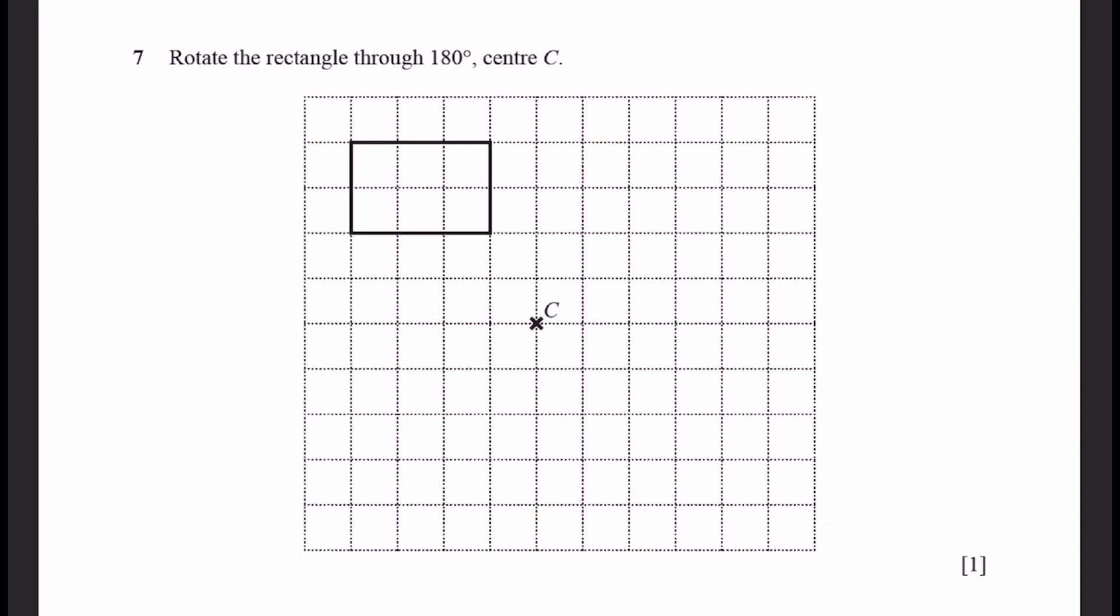Question 7. Rotate the rectangle 180 degrees, center C, which is given here. So we rotate this 180 degrees. It'll become the point over there. We rotate this 180 degrees, it'll go over here. We rotate this 180 degrees, it'll go like this. This point over here. And we rotate the last point 180 degrees, it'll go all the way down there. We simply connect the dots now, like this. That's the answer.